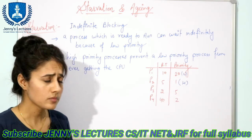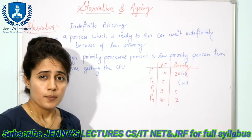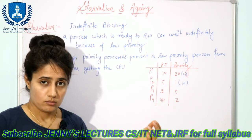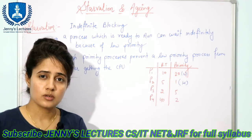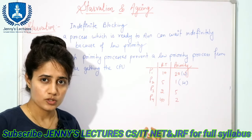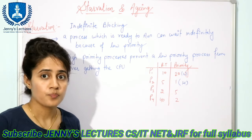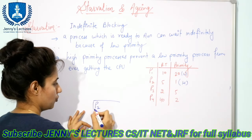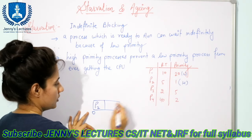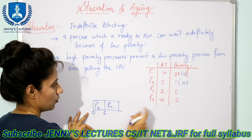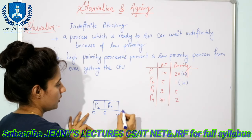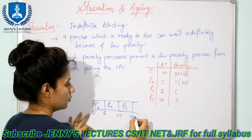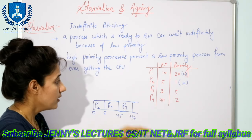We are taking static four processes, but when working on an actual operating system, it is not always true that no new process will come until these four terminate. The practical scenario is: CPU is allocated to P2 from 0 to 5, then P4 from 5 with burst time 40, so from 5 to 45, then P3 for two units of time at 47.